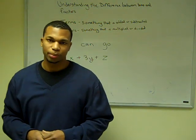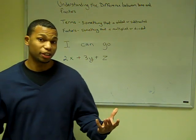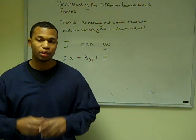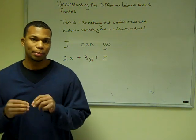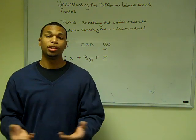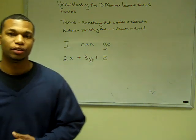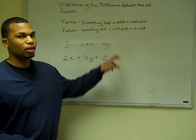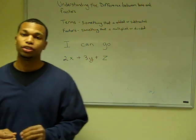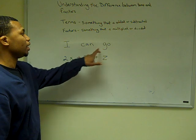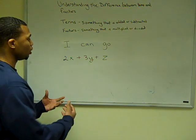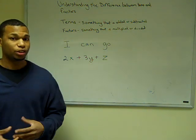To understand the difference between terms and factors, we need to know what each one is. The definition of a term is something that can be added or subtracted. The definition of a factor is something that can be multiplied or divided. As an analogy, consider the sentence 'I can go.' That sentence is made up of words, and those words would be our terms. In a mathematical expression, terms are separated by addition or subtraction.